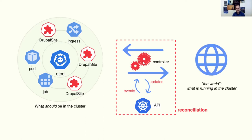The controller's action is to make sure that the actual state of the cluster represents what is specified by the resource. In the case of a pod, the pod will specify that there should be a set of containers running on a node. And the controller, if it finds that the assigned node does not have those containers running, might call the kubelet and instruct it to instantiate those containers. This process of comparing the specification of the resource with the actual state of the world is called a reconciliation, and it happens in a loop. The controller is always active, running, listening for events, and every time an event happens it runs its reconciliation logic.